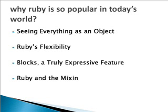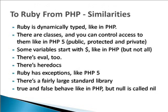Unlike many object-oriented languages, Ruby features single inheritance only, on purpose. But Ruby knows the concept of modules, called categories in Objective-C — modules are collections of methods. Ruby is dynamically typed like PHP, so we don't have to worry about declaring variables. There are classes and you can control access to them like in PHP 5: public, protected, and private. Some variables start with $ like in PHP.